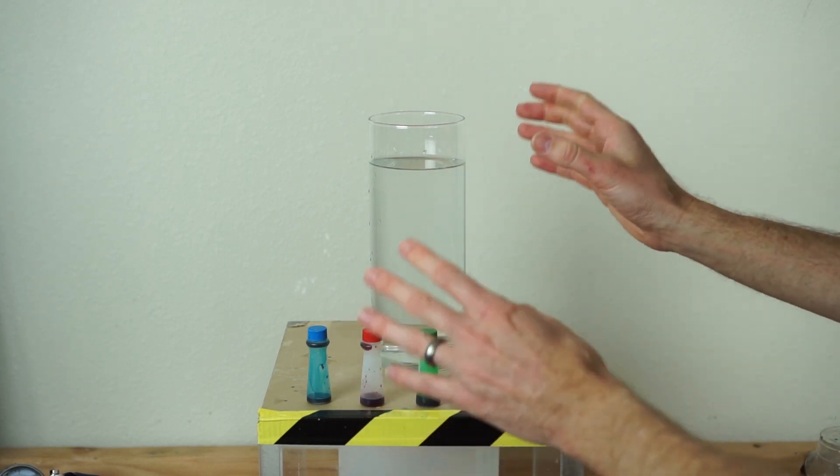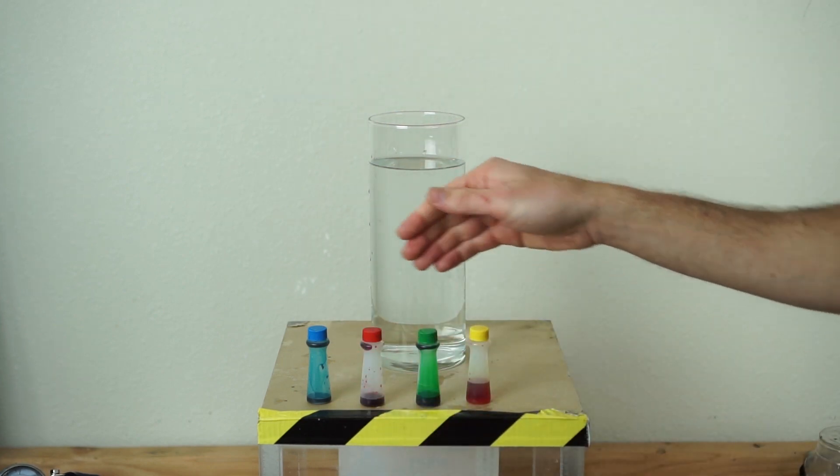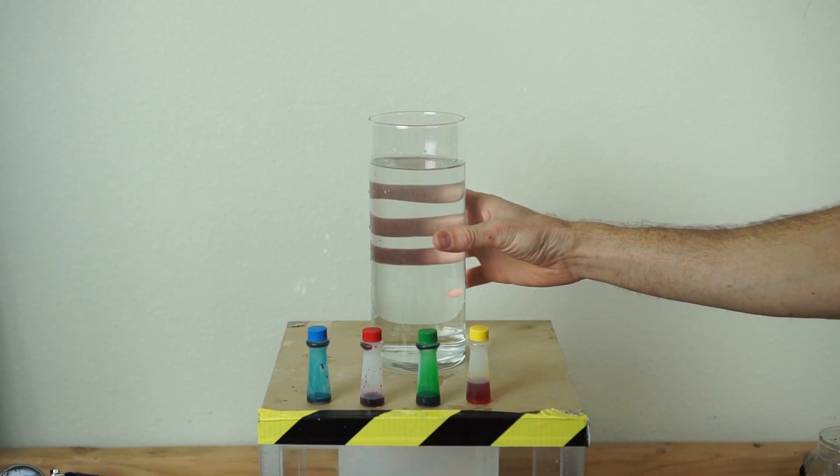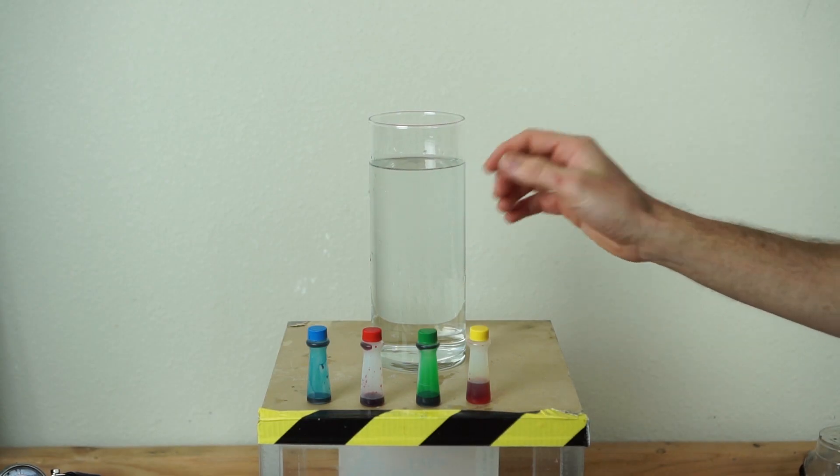Today I'm going to be testing if I can unmix a liquid. So I have here a jar of water and some food coloring. First let me put some drops of food coloring in here and mix it up and we'll see if we can unmix it.